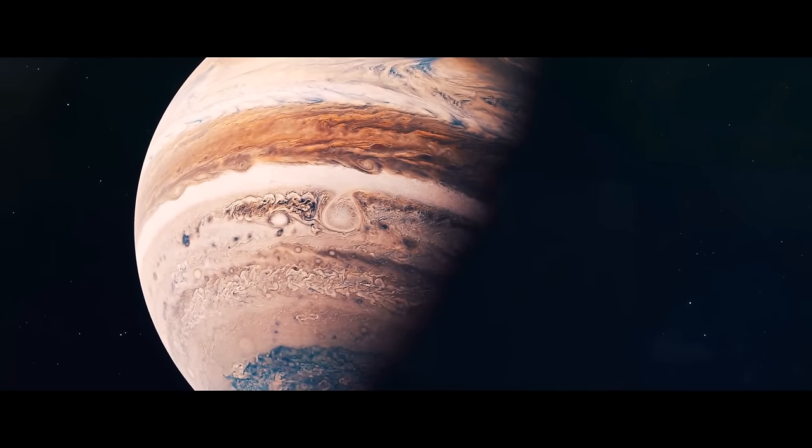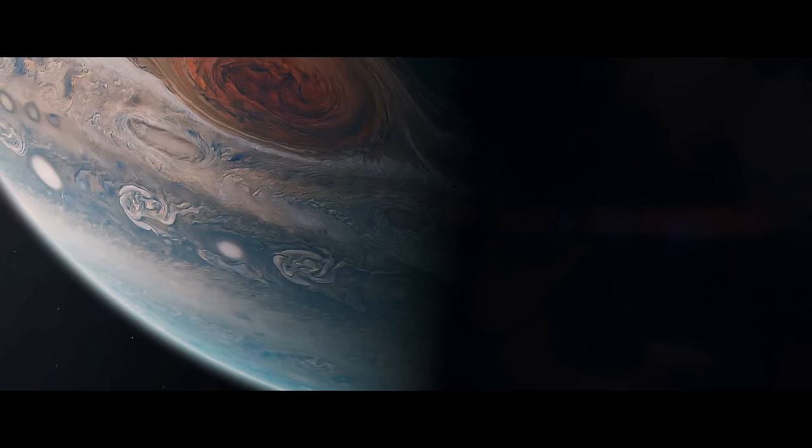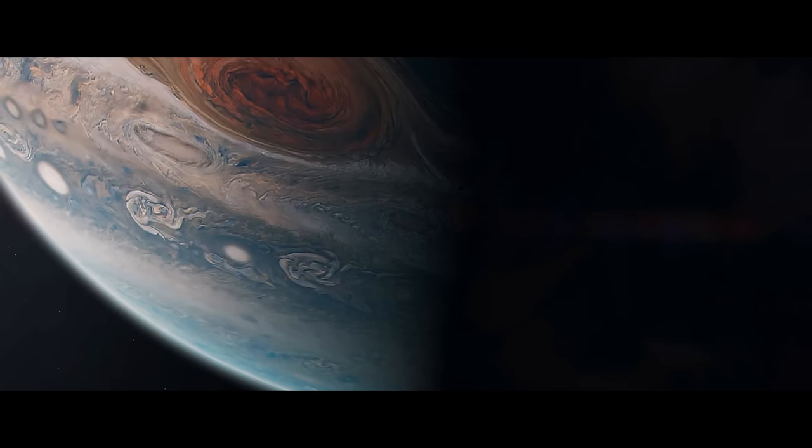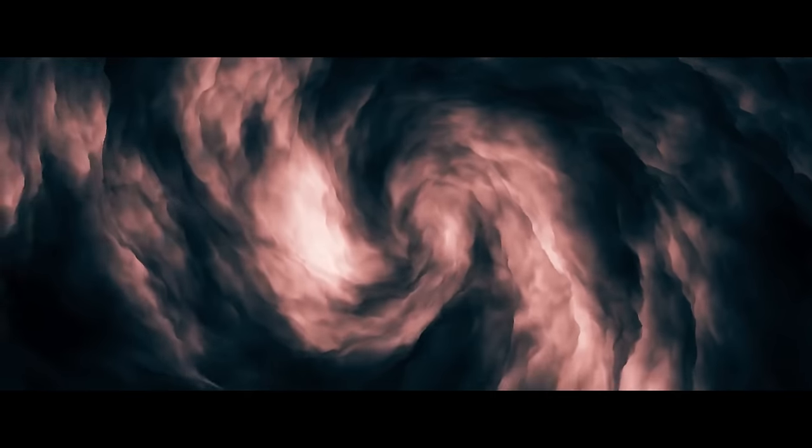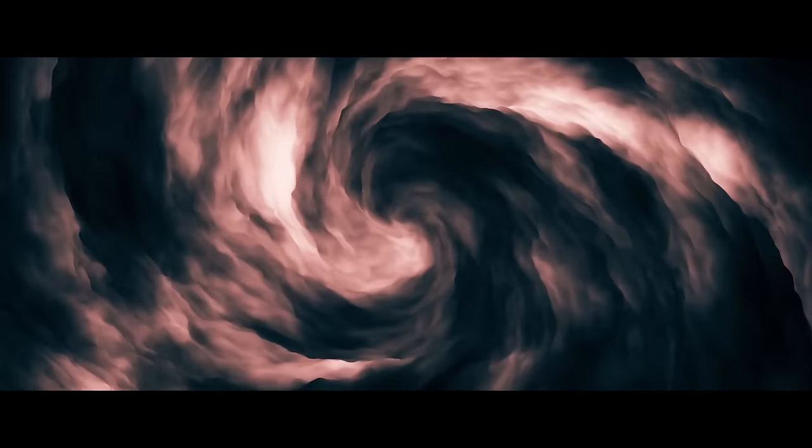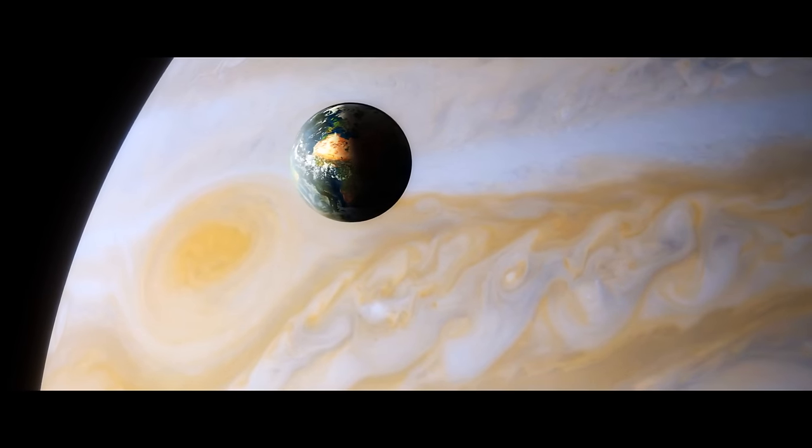Also, if Jupiter turned into a red dwarf, its most prominent feature might probably disappear for good. I'm talking about the Great Red Spot. It's an enormous storm raging in the southern hemisphere of the gas giant. Its top parts tower more than 5 miles above the tops of the surrounding clouds. The storm is almost twice as wide as our planet.